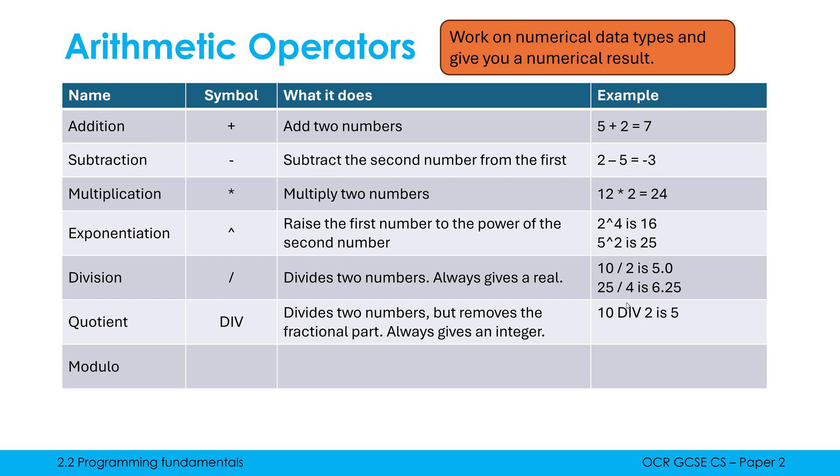So if I was doing 10 DIV 2, this is 10 divided by 2, but it's giving me an integer, which is just 5. If I did 25 DIV 4, I just get 6, because the 0.25 gets removed when it converts it to an integer. So it's not rounding down, it's not rounding up, it's just getting rid of anything after the decimal point. And I would imagine some students aren't aware that the proper name is quotient.